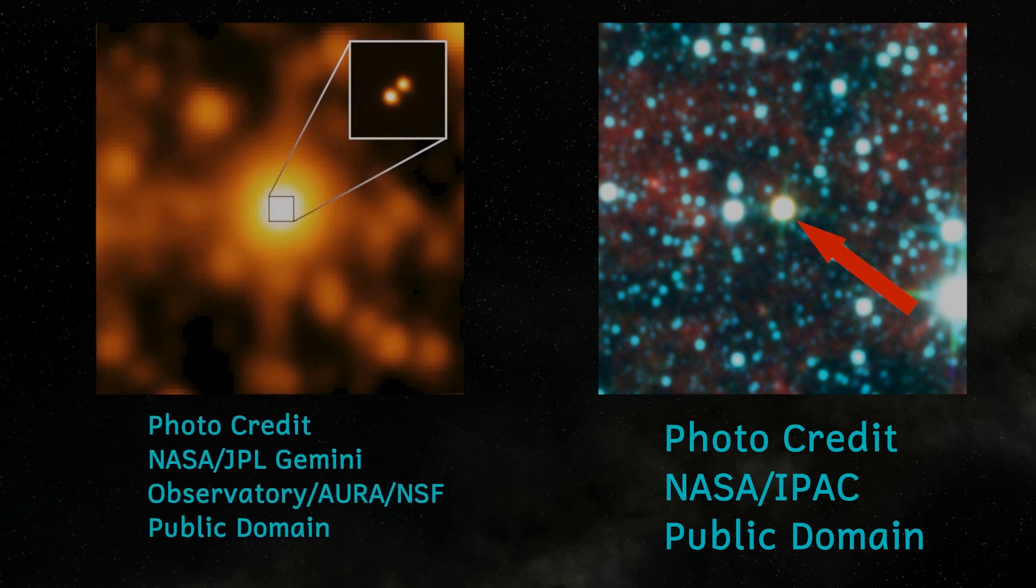This second image again from NASA was taken by the Wide Field Infrared Survey Explorer or WISE Orbital Telescope. Again the resolution was not able to distinguish between the objects but a further image taken from the Gemini Observatory in Chile was able to determine that this object was in fact two dim brown dwarf stars.